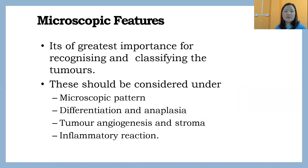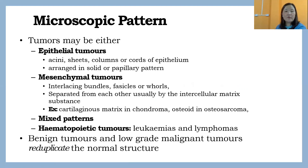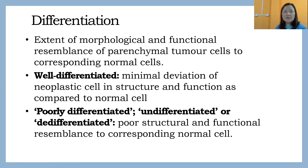For microscopic features, the microscopic pattern, differentiation and anaplasia, tumor angiogenesis, and stromal reaction will be discussed. Epithelial tumors are arranged in a solid and papillary fashion. Mesenchymal tumors are usually separated from each other using intercellular matrix substances. Benign tumors and low-grade malignant tumors reduplicate the normal structure — they will almost look like normal structure. Differentiation refers to how much that particular tissue resembles the normal one both morphologically and functionally. Well-differentiated and poorly-differentiated are the most common terms seen under differentiation.